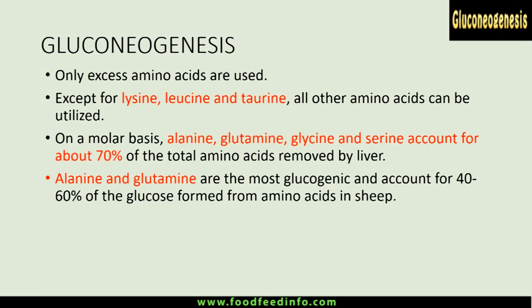Protein is a costly nutrient and its utilization for glucose synthesis is not preferred. However, when hypoglycemia occurs, animals will utilize amino acids for glucose synthesis as they have no other option. Under normal conditions, only excess amino acids are catabolized or used as energy. Except for lysine, leucine, and taurine, the remaining amino acids can be utilized. On a molar basis, alanine, glutamine, glycine, and serine account for about 70% of total amino acids removed by the liver.